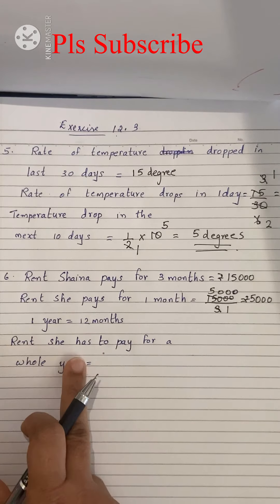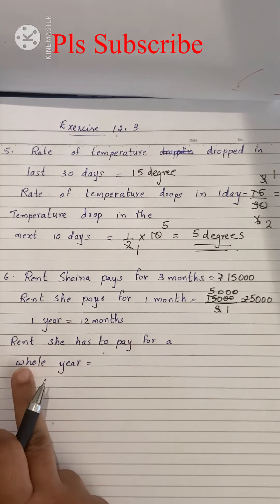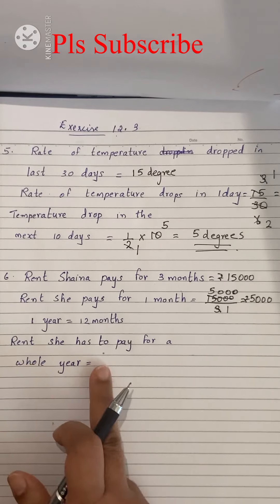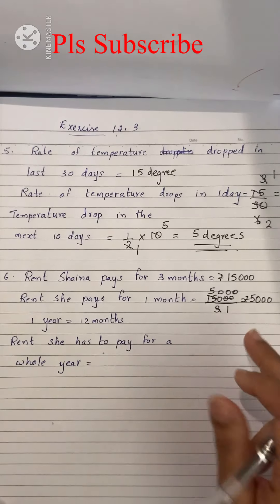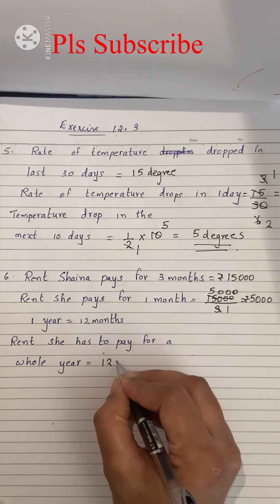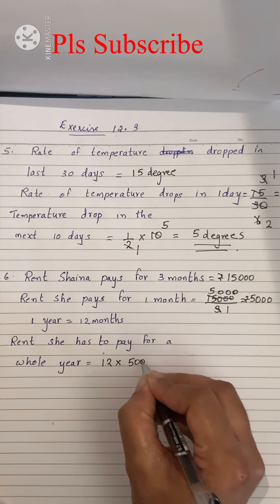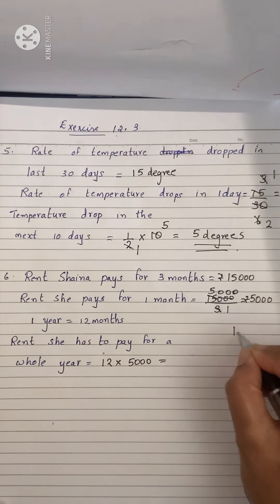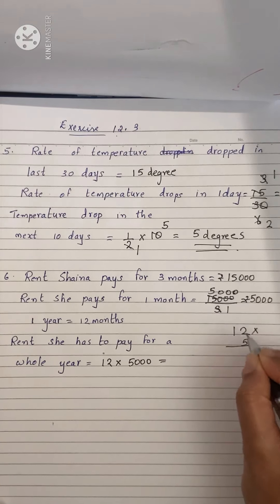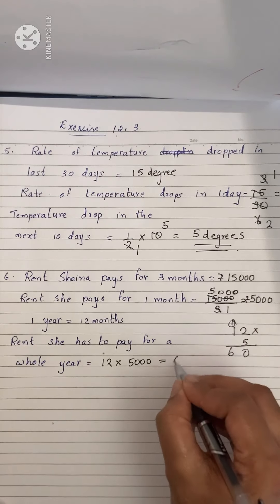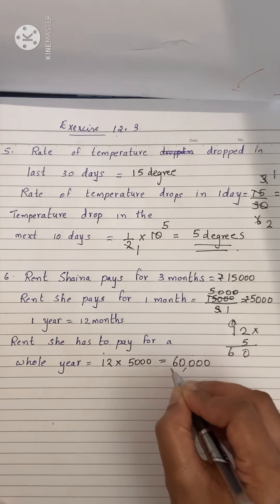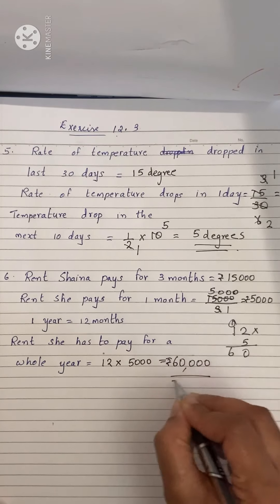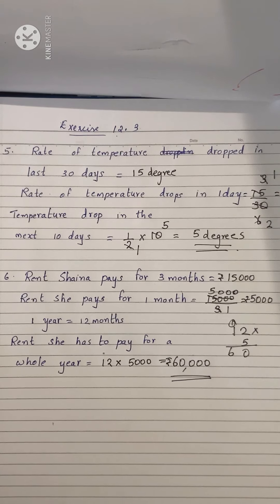We know that 1 year equals 12 months. We need to find the rent she has to pay for a whole year, that means for 12 months. That is 12 into 5,000. 12 multiplied by 5: 5 2s are 10, 5 1s are 5 plus 1 is 6, write 60 and write the 3 zeros — rupees 60,000. She needs to pay for one whole year.